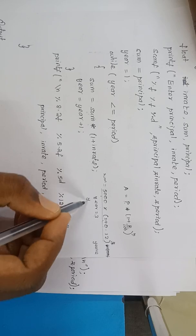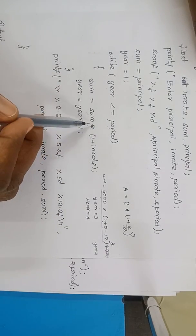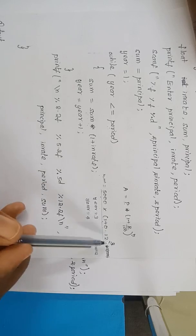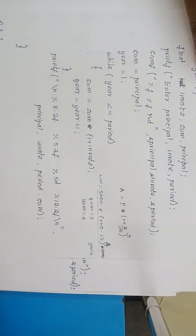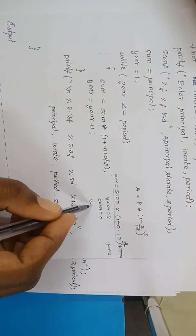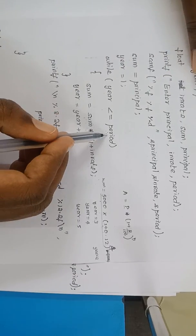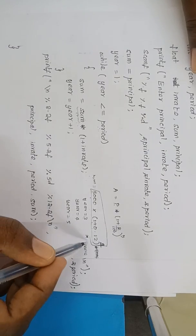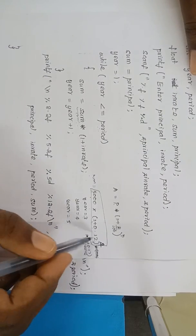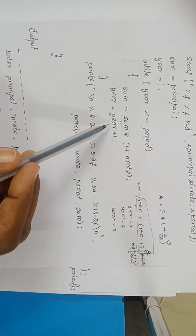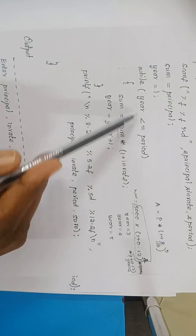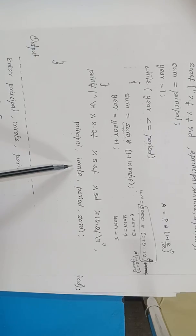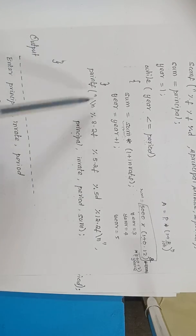Year is incremented and year becomes 4. 4 less than or equal to 5: it gets into the loop. Once again the value stored in sum is taken, and 1 plus in_rate is multiplied, so the power becomes 4. Finally, year becomes 5. 5 less than or equal to 5: yes, it is true. It gets into the loop. The total value is taken and multiplied with 1 plus 0.12, so it becomes whole to the power 5. Now year becomes 6. 6 less than or equal to 5 is false, so it comes out of the loop. It then prints the values: principle, in_rate, period, and the sum we have calculated.